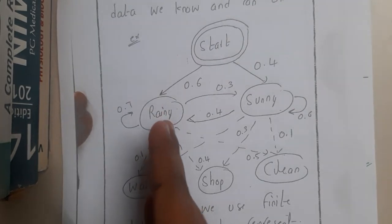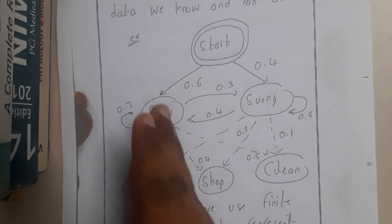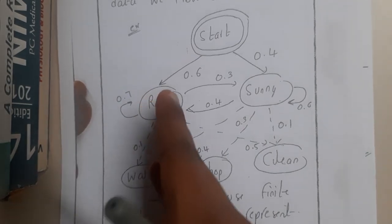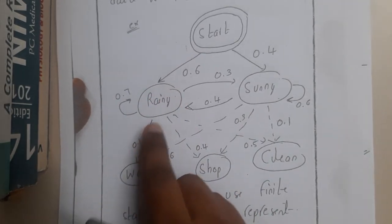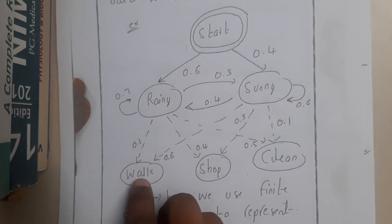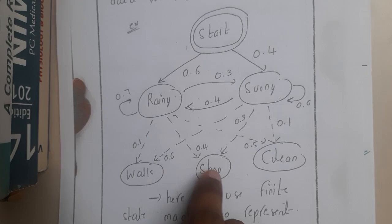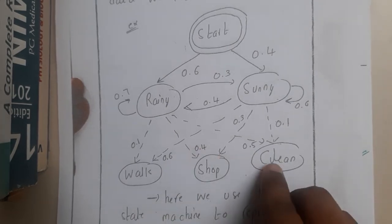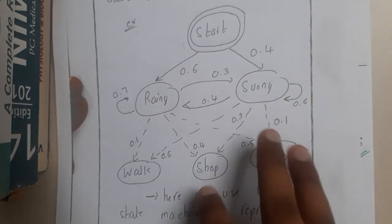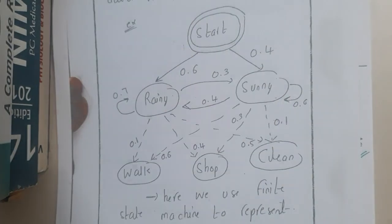From start you are having two options: rainy or sunny. There is a probability of being rainy 0.6 and being sunny 0.4. From rainy, there is a probability that even if it is raining you might be going for walking which is 0.1, similarly for going to shop it is 0.4, similarly to clean your house it is 0.5.